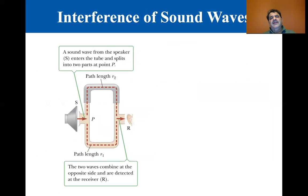Okay, now let's get into interference of sound waves. This is actually 14.7. It's a short little section. So you have a sound wave from the speaker S that enters the tube and splits into two parts at point P. The two waves combine at the opposite side and are detected at the receiver.